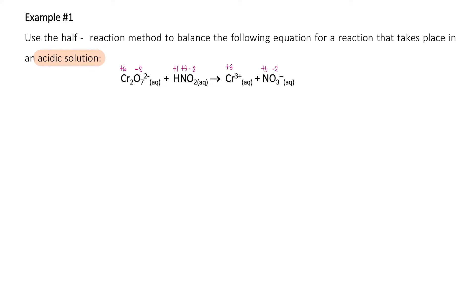We can see that there is a change in the oxidation number of chromium from positive six to positive three — its oxidation number decreases. When there is a decrease in oxidation number, it means the substance has undergone reduction.